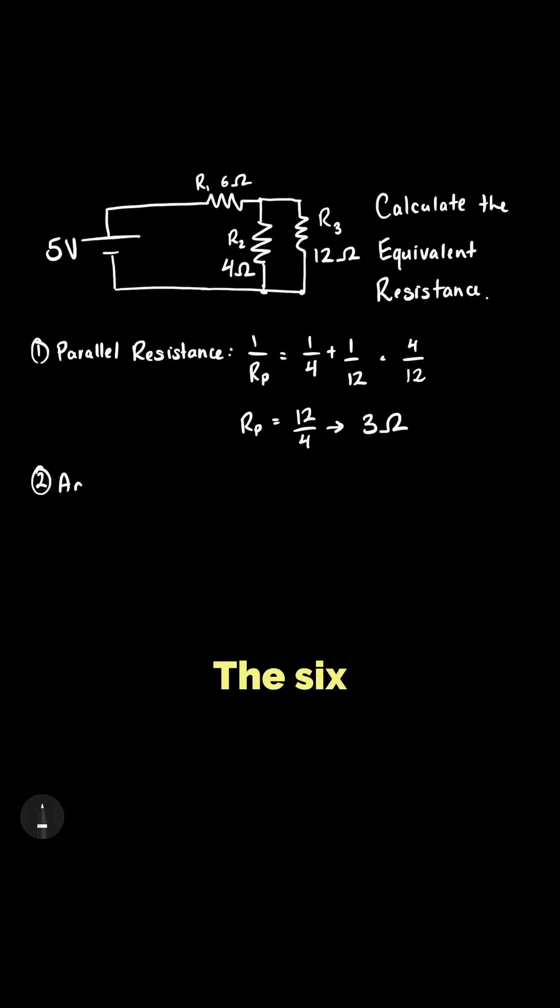Now, add the series resistor. The 6 ohm resistor is in series with our 3 ohm equivalent from step 1. Since resistors in series add directly, 6 ohms plus 3 ohms gives a total resistance of 9 ohms.